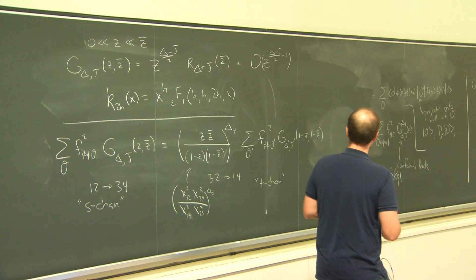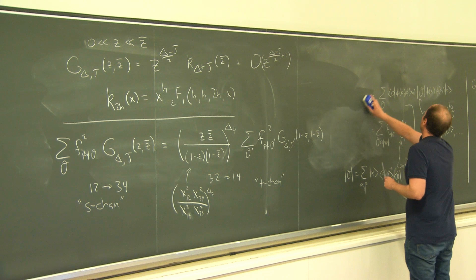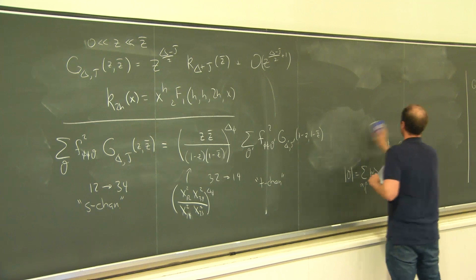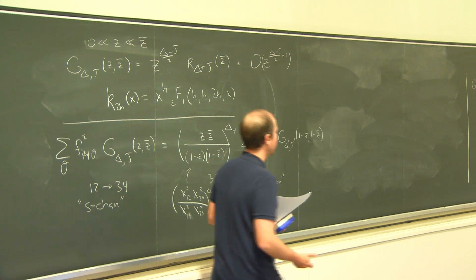What we're going to do now is introduce another way of writing the four-point function that is closely related to the conformal block decomposition, but will allow us to package together the data appearing in the conformal block decomposition in a slightly more efficient way. This more efficient packaging is necessary for writing down the Lorentzian inversion formula. The machinery that will let us do this is harmonic analysis.